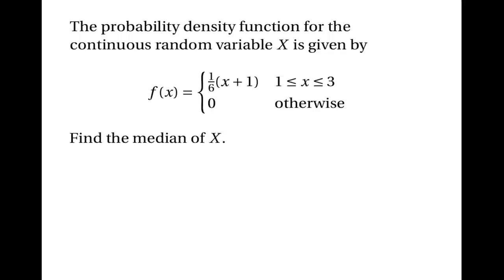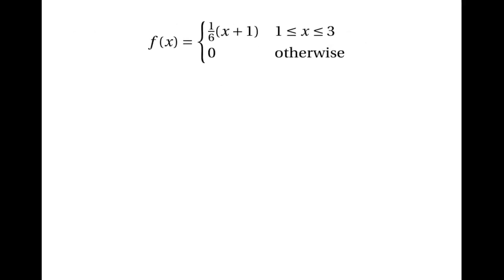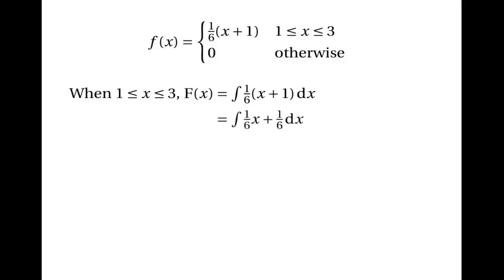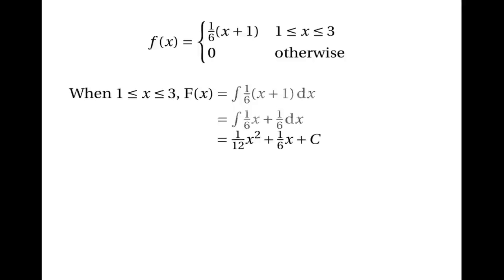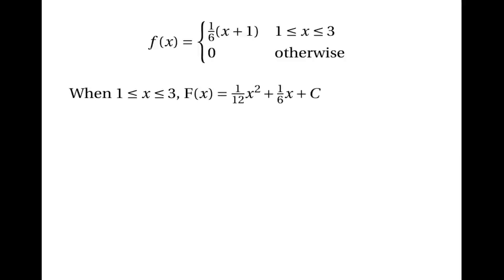One way to convert a probability density function into a cumulative distribution function is to use indefinite integration. We can say that when x is between one and three, F(x) is the integral of one sixth of x plus one. That's the same as the integral of one sixth x plus one sixth, which gives us one twelfth x squared plus one sixth x plus c. Now we need to find the constant c, and we can do that by looking at F(1).